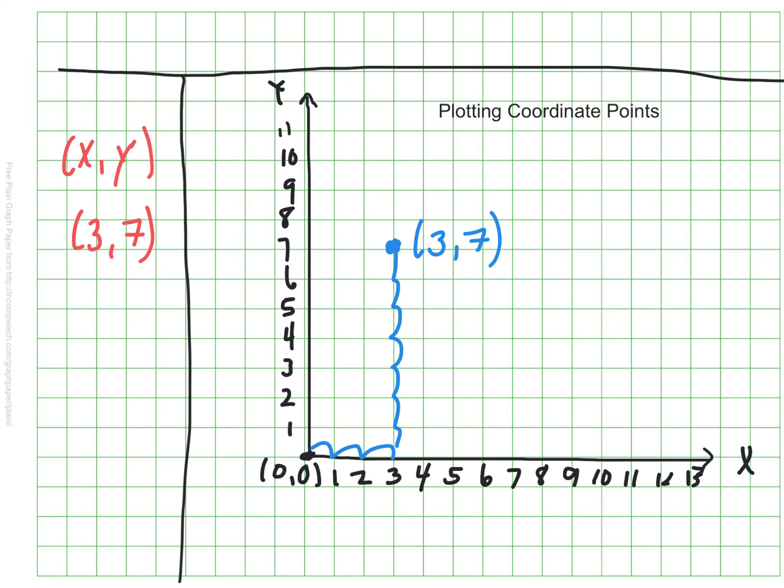So now let's have you try a point. Go ahead and plot the point 11, 4. The coordinate point 11, 4. Take a moment. Mark it on your graph. How'd you do? Does yours look like it's in the same spot as mine? Great.